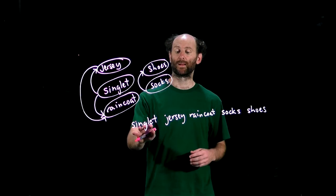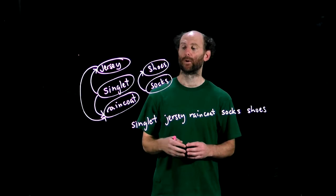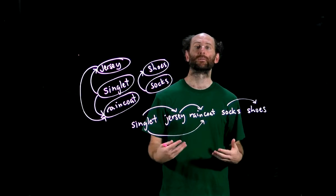One ordering we might try is singlet first, then jersey, then raincoat, then socks, then shoes. Notice that if I draw the arcs on this graph they all go in the same direction from left to right down the ordering.